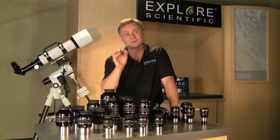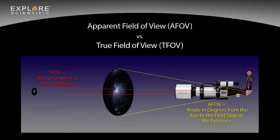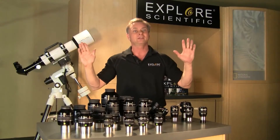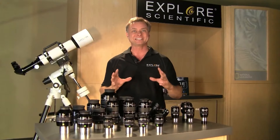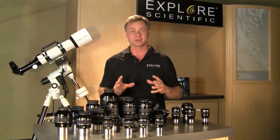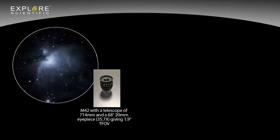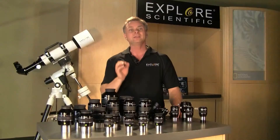Many people want to know the difference between apparent field of view and true field of view. True field of view is the actual degrees of sky coverage that you're looking at — the chunk of sky that you see. Apparent field of view is the angle of degrees from your eye to the edge of the field stop in the eyepiece. When you're looking through an eyepiece with a wider apparent field of view, you not only get more true field of view, but you get the effect of seeing through a wide picture window. For example, the Orion Nebula M42 is 60 by 66 arcminutes in angular size — twice the size of the full moon in the sky — and with a 714mm focal length telescope and a 68-degree 20mm eyepiece, you get 35.7 power and a 1.9-degree true field of view.